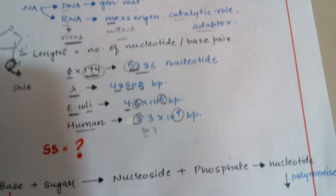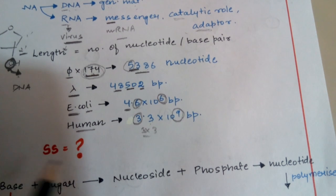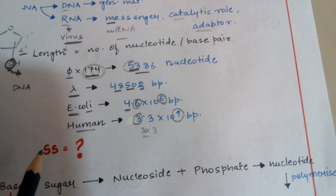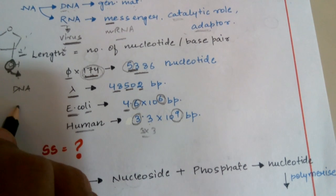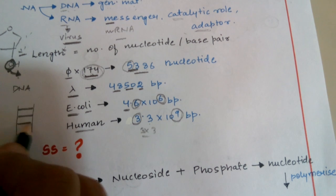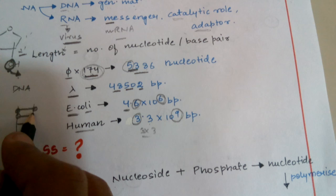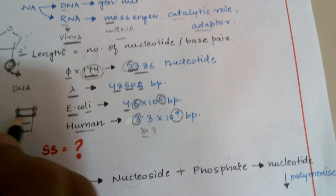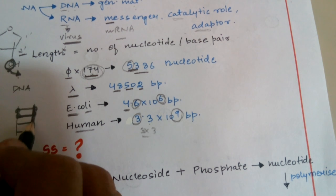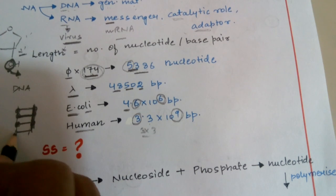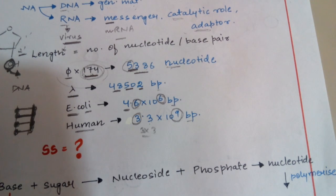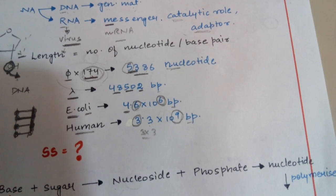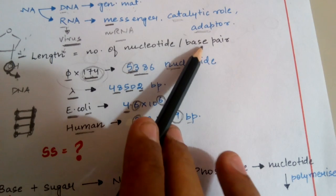Now a question: of these four organisms, which has single-stranded genetic material? Notice that phi 174 is listed in nucleotides, while the others are in base pairs. Base pairs are formed from two bases — nitrogenous bases — so if they form base pairs they are double-stranded. Since phi 174 is measured in nucleotides and not base pairs, it is single-stranded. The length equals the number of nucleotides, or base pairs in double-stranded material.